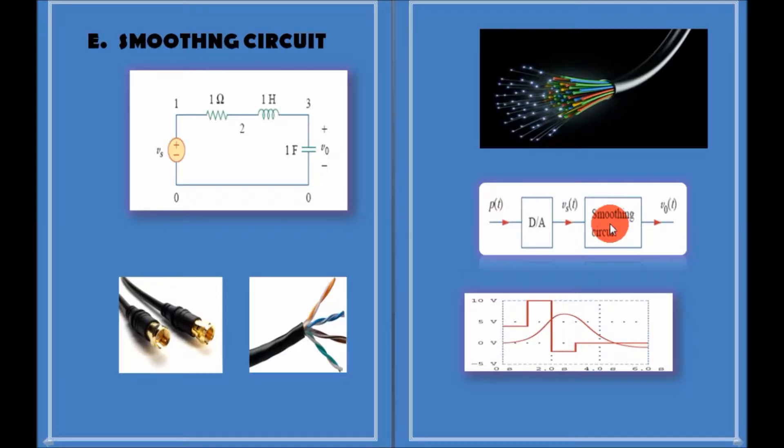An RLC network always opposes a sudden change in the voltage. So as a result, whenever there is a sudden change in voltage, the capacitor opposes it and it generates a smooth curve using the step response of these circuits. So in this way, we ultimately get our analog signal back.